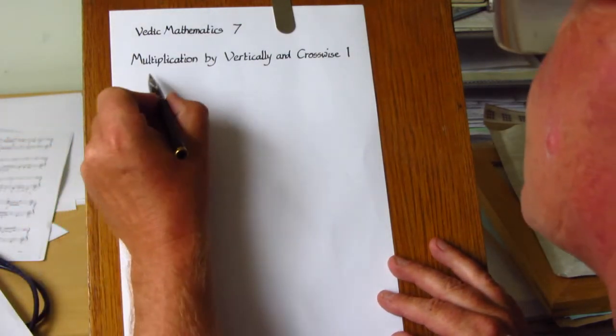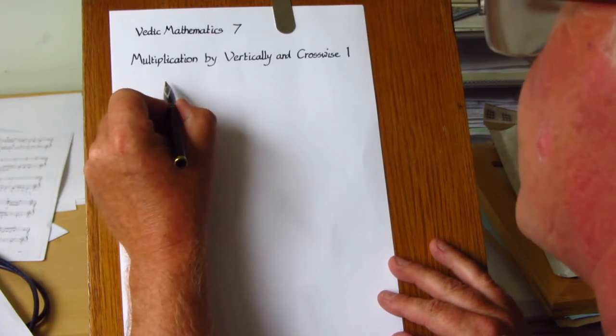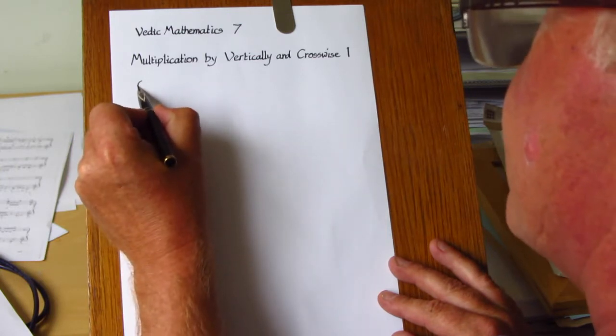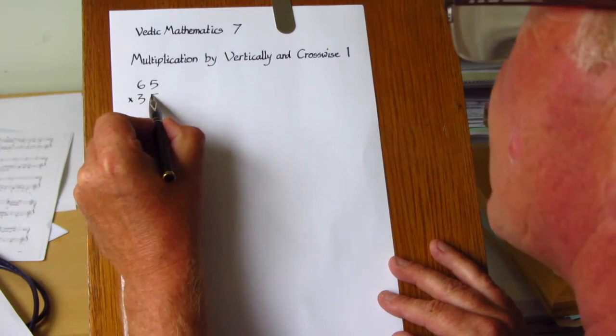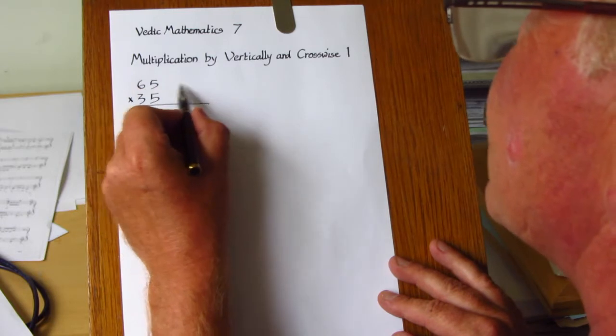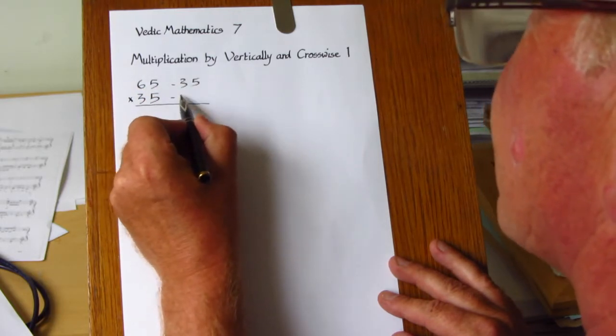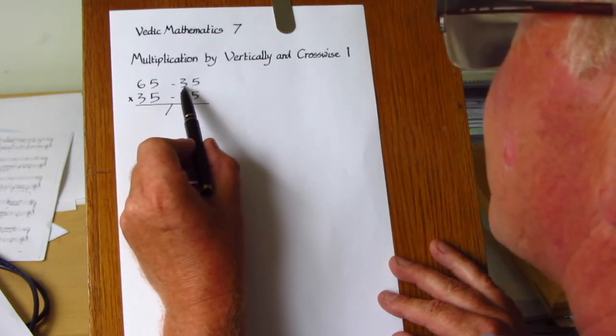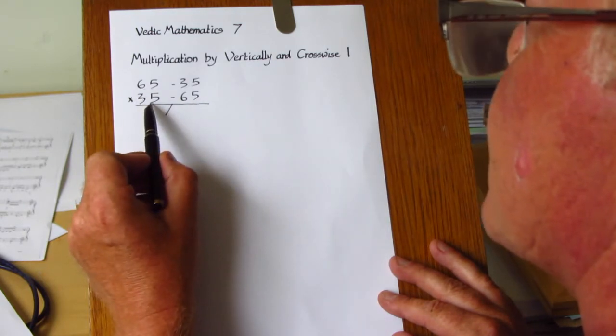But it is a special case because if the numbers are too far away from the power of 10, then the step on the right becomes difficult. For example, if we have to multiply 65 by 35 using the Nikhilam method, all from 9 and the last from 10, the deficiencies here are 35 and 65. And so when you come to the step on the right you are faced with multiplying 35 by 65, which is exactly the same as what you started with.